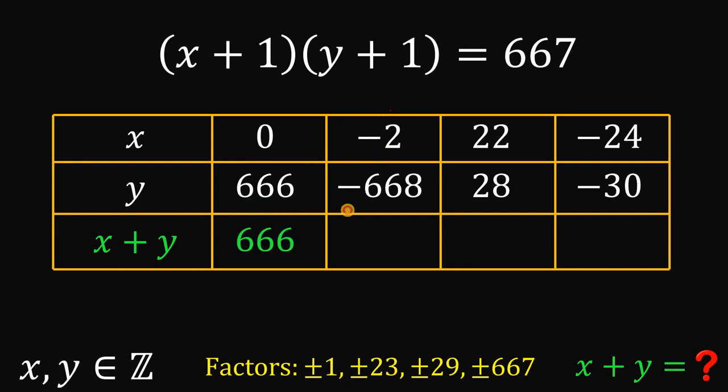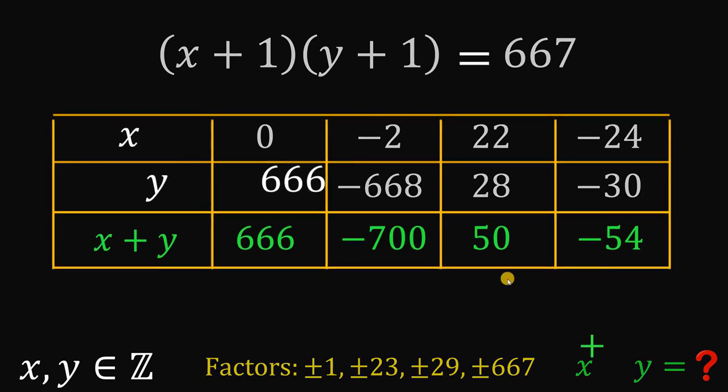Negative 2 plus negative 668, this will give us negative 700. 22 plus 28, this will give us 50. And the last one, negative 24 plus negative 30, this will give us negative 54. And take note that we want just the sum of x plus y. And here we go. We have 666, negative 700, 50, and negative 54.